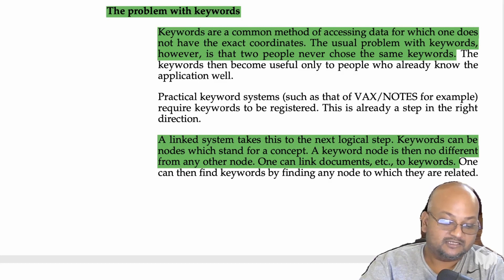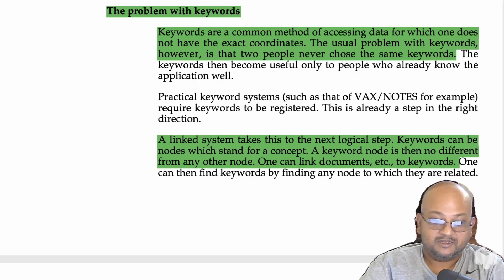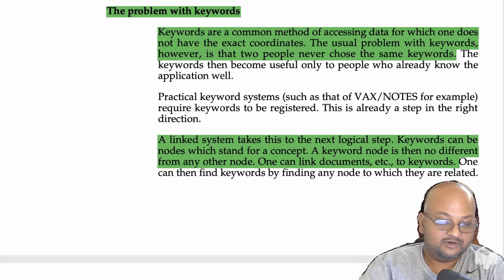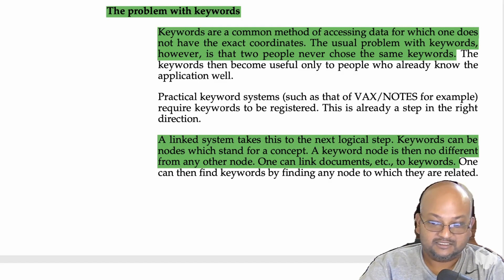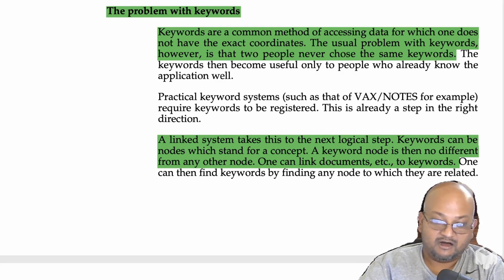The other very common way of organizing information he compares his hypertext proposal to is organizing information around keywords — you associate keywords with every piece of information and retrieve it by invoking those keywords. The problem, however, is that it's very hard for a large number of people to agree on which keywords to associate with a given piece of information. But if you look at it through the lens of a linked system, keywords can simply become nodes, and you can link other documents to this node, giving you a nice way of capturing the relationship between a concept or keyword and the things that refer to it.